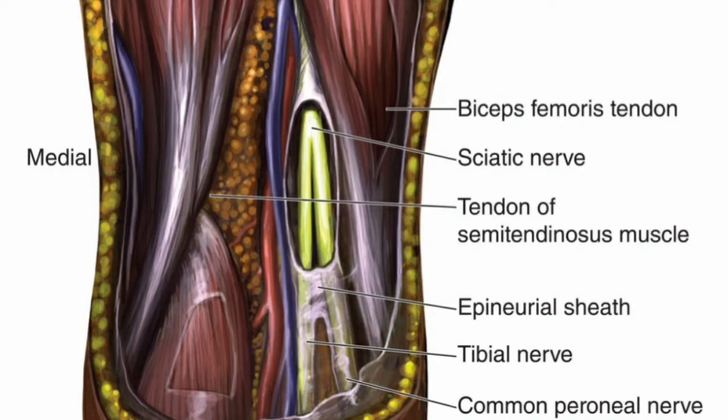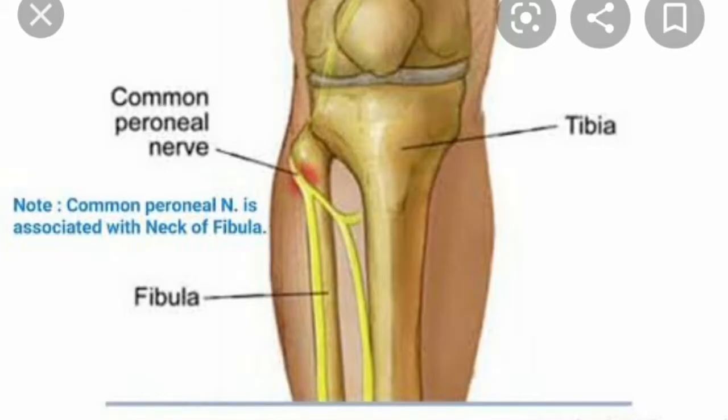Following its divergence from the sciatic nerve, the common peroneal nerve continues its path laterally and descends along the head and neck of the fibula. Its major branches in this region are branches to the knee joint and cutaneous branches that form the sural nerve. Its terminal branches are the superficial and deep peroneal nerves.